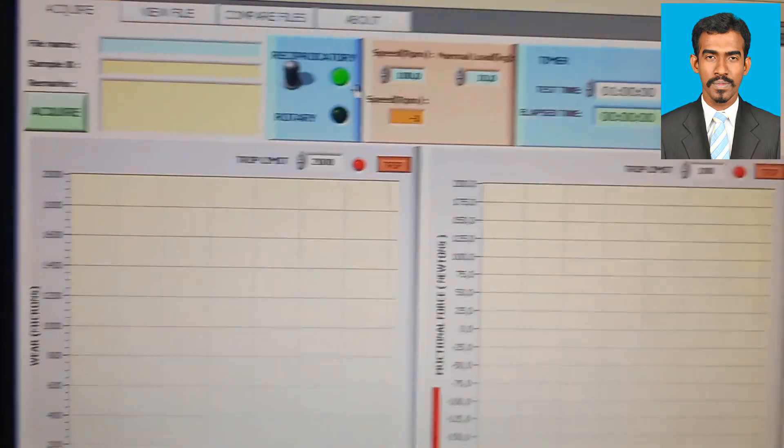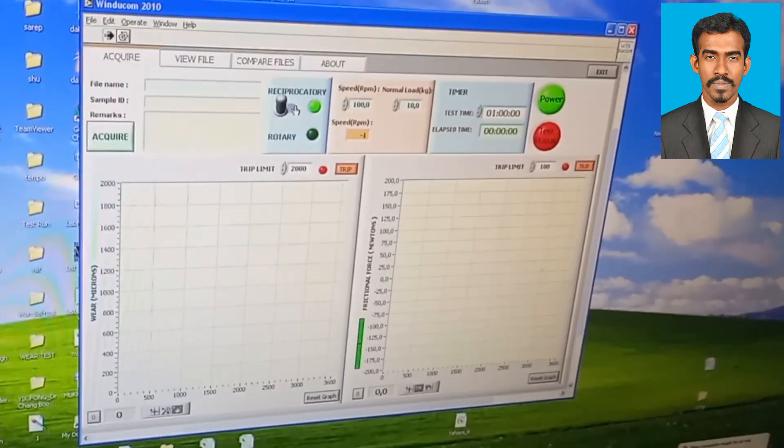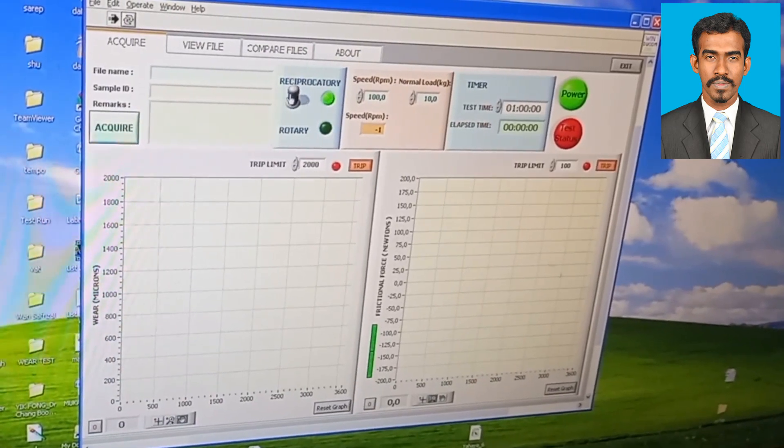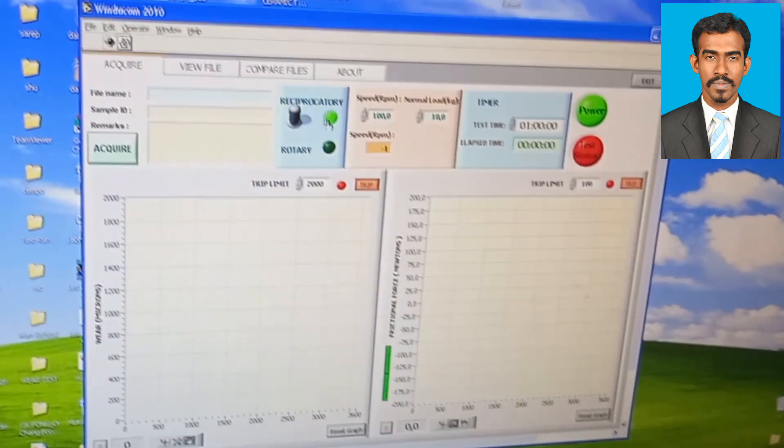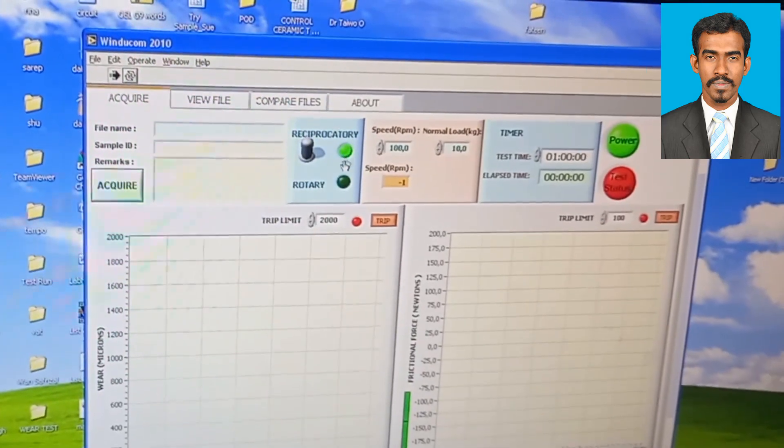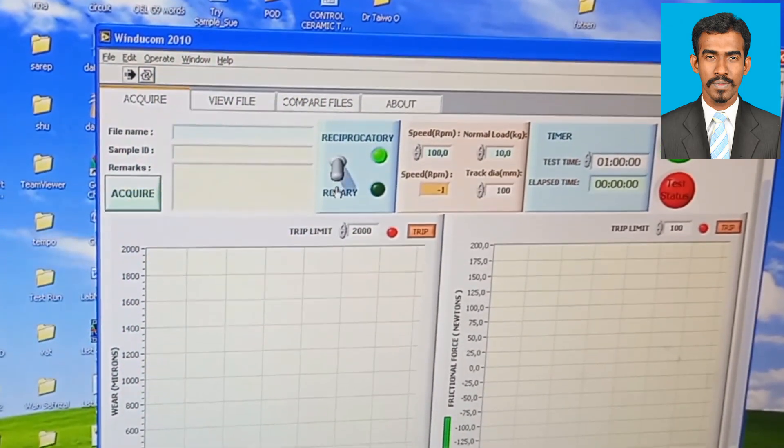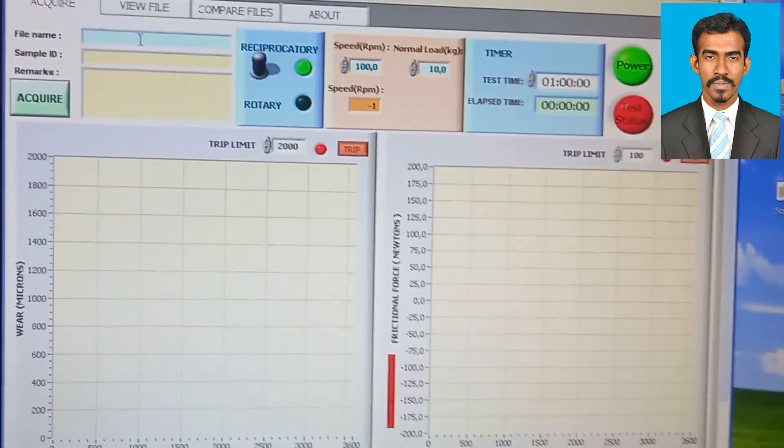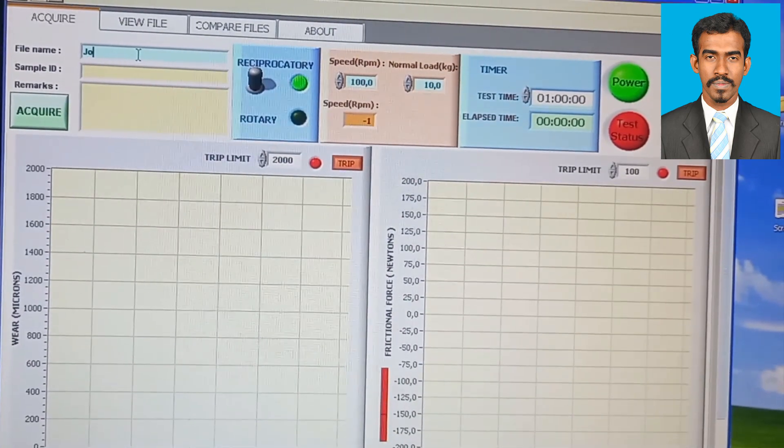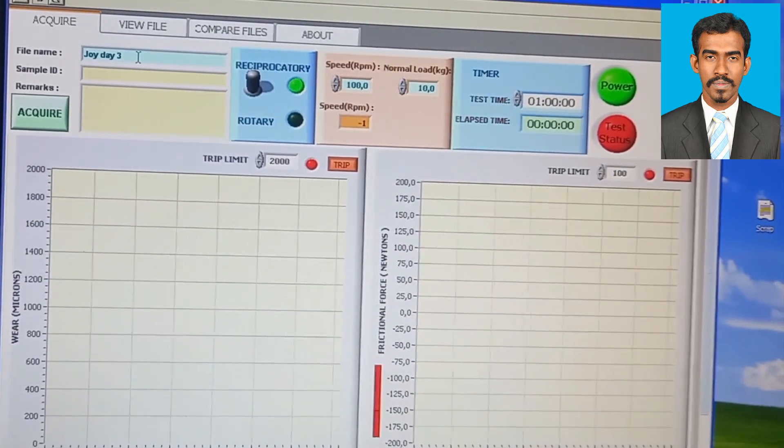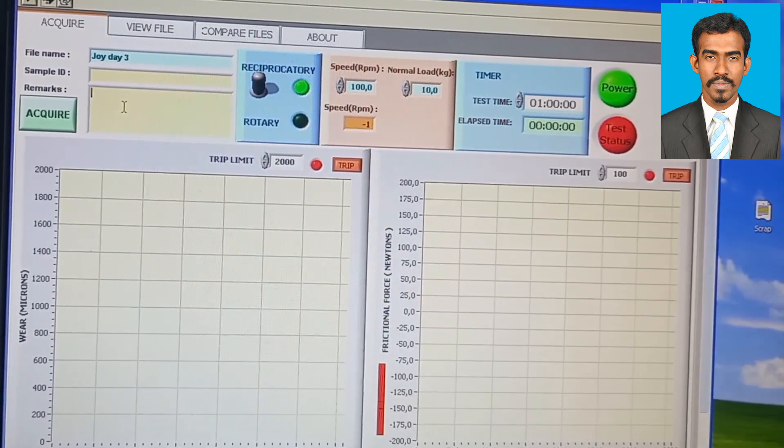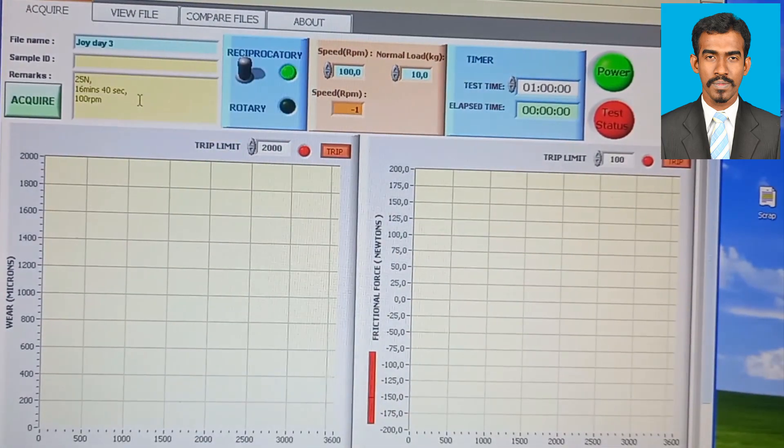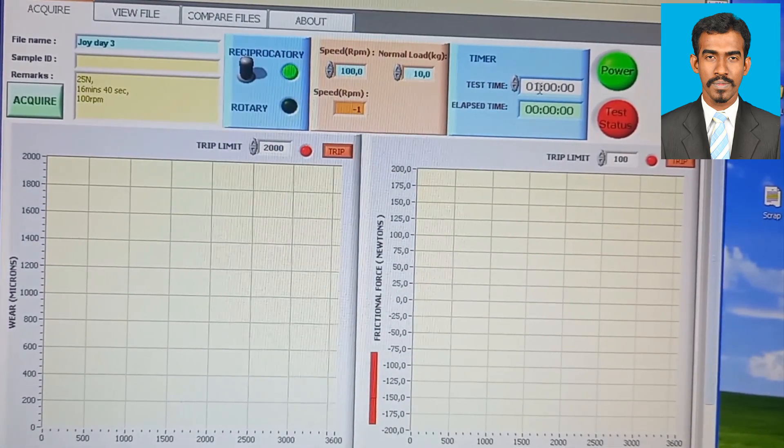The software name is Winducom. We'll open the software. Here my experiment is reciprocating, but we can also set it for rotating. There's a knob here - if we press this light it will move for rotary motion. Whichever motion we need, we can select that one. We'll give a name and can give some remarks. We can enter our parameters such as the load, the RPM, the time.